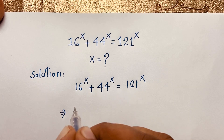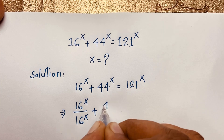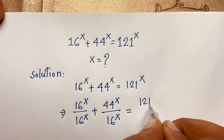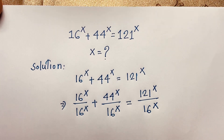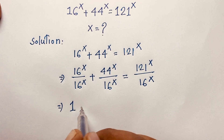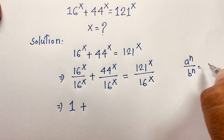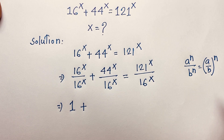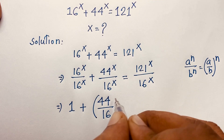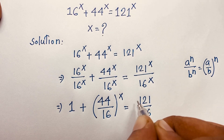Now I divide both sides by 16^x. So I consider the expression: 16^x over 16^x plus 44^x over 16^x equals 121^x over 16^x. The first term cancels to give 1. Then, using the law that (a/b)^n = (a^n)/(b^n), I get 1 plus (44/16)^x equals (121/16)^x.